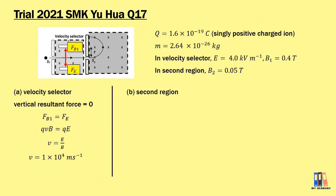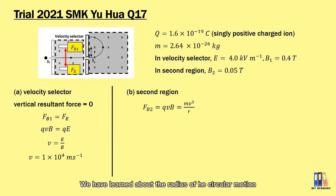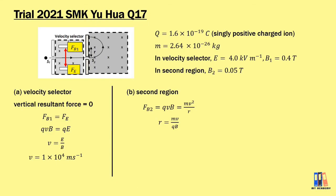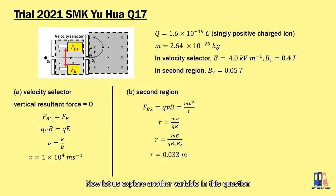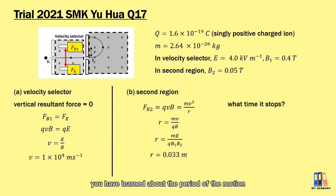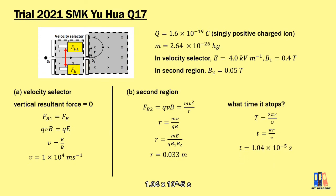When the charge ion enters the second region with magnetic flux density 0.05 tesla, the magnetic force causes circular motion and acts as the centripetal force: QVB = mv²/r. The radius of circular motion is r = mv / (qB). Substituting v = E/B₁ and the given values, the radius of the circular path is 0.033 meters. The ion moves in a semicircular path, so the time taken is t = πr / v, giving t = 1.04 × 10⁻⁵ seconds.